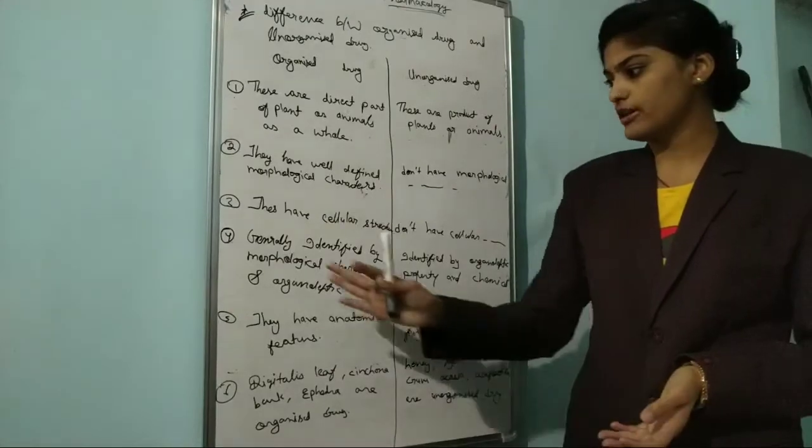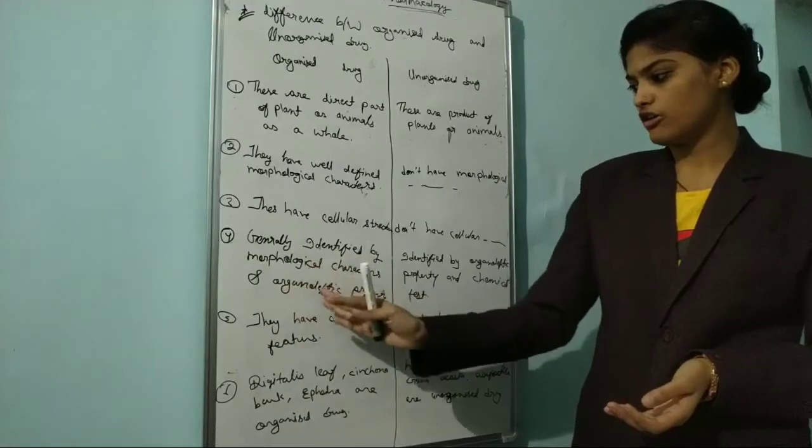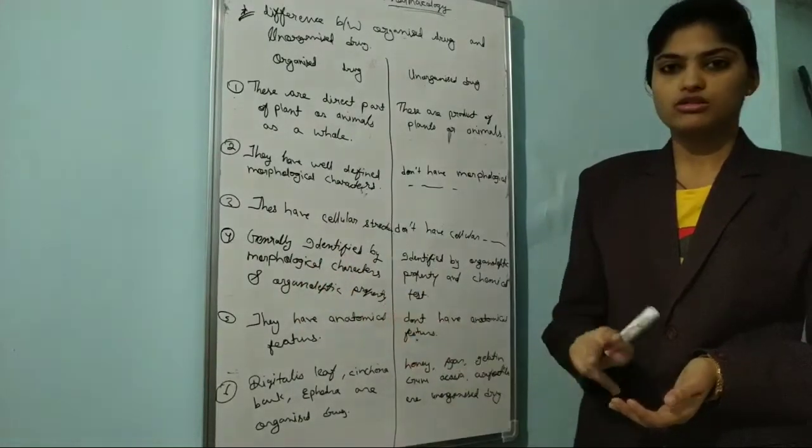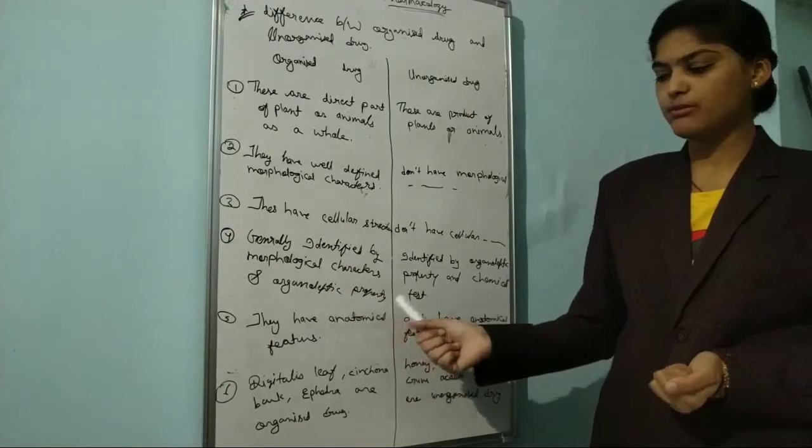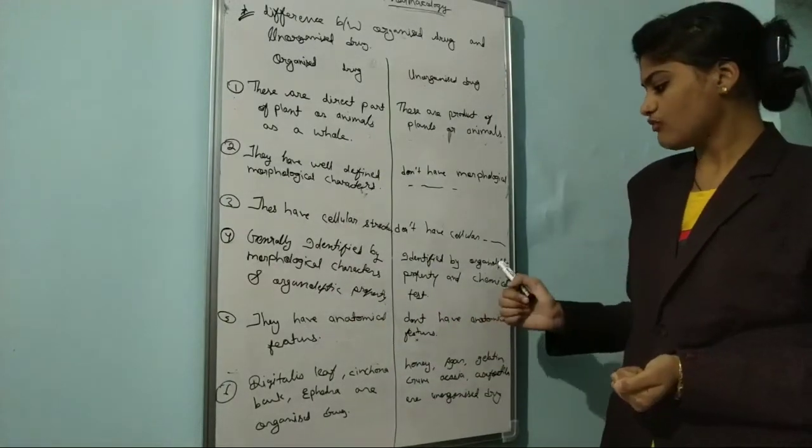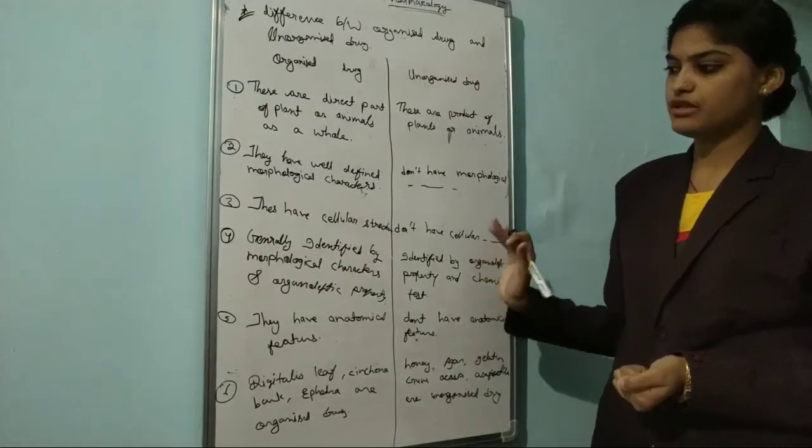Fourth point is organized drugs are generally identified by morphological characters and organoleptic properties. Unorganized drugs are identified by organoleptic property or chemical tests.